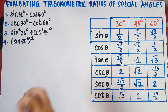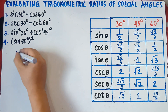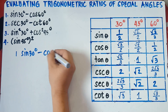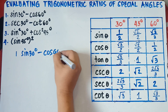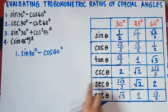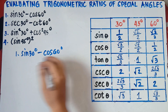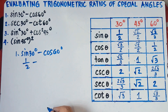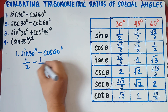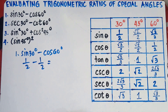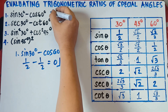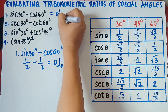Let's start with number 1: sine 30 degrees minus cosine 60 degrees. Sine 30 degrees is 1/2, minus cosine 60 degrees, which is also 1/2. So 1/2 minus 1/2, that is 0. The answer for number 1 is 0.